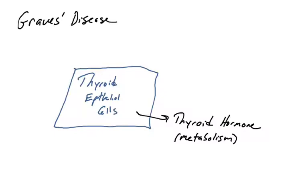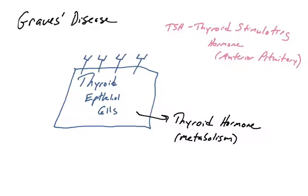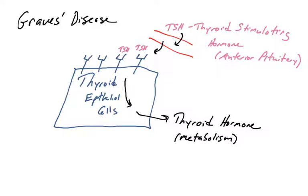Thyroid hormone increases metabolic rate, heart rate, blood pressure — all sorts of things that increase metabolism. The thyroid is regulated via a hormone called TSH, thyroid stimulating hormone, which is generated and released by the anterior pituitary. When the brain recognizes that metabolism or temperature is too low, TSH is released into the bloodstream and binds receptors on thyroid epithelial cells, signaling them to make and release thyroid hormone, thus increasing the metabolic rate.